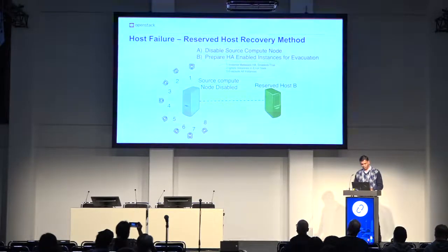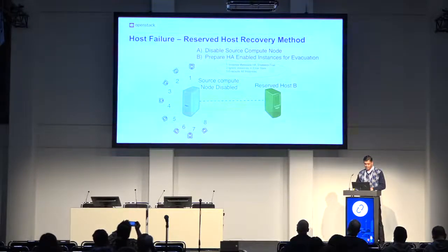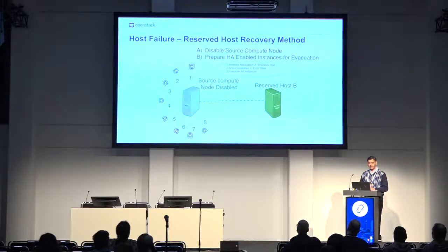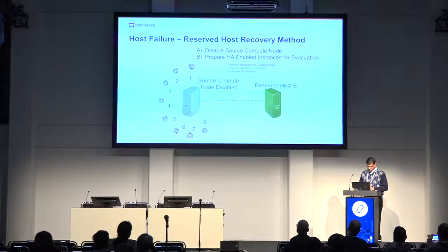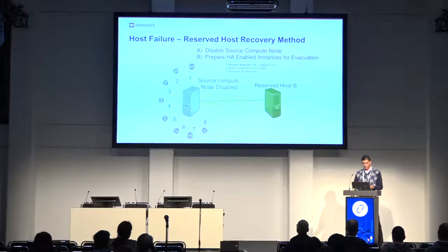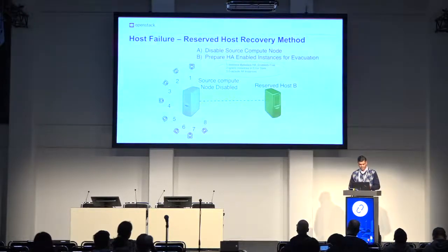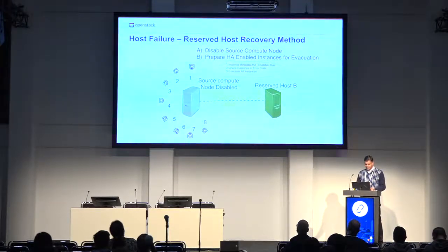We don't want other instances to be launched on that compute host since it's still failed — there is a possibility the node could come back up. So the first task disables the compute service on the source compute node. The second task is 'prepare HA-enabled instances for evacuation'. We have provided several config options to decide which instances should be evacuated: one is instance metadata HA-enabled, where as a user you can mark an instance as HA-enabled. The second option is to ignore instances in error state — those instances won't be evacuated. The third option is to evacuate all instances, bypassing the first two config options regardless of HA-enabled status or error state.